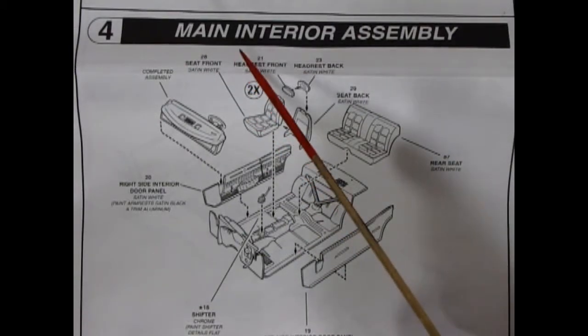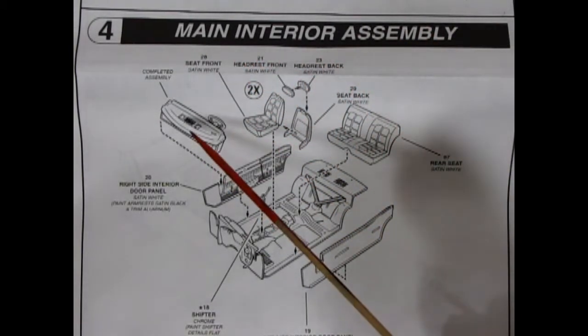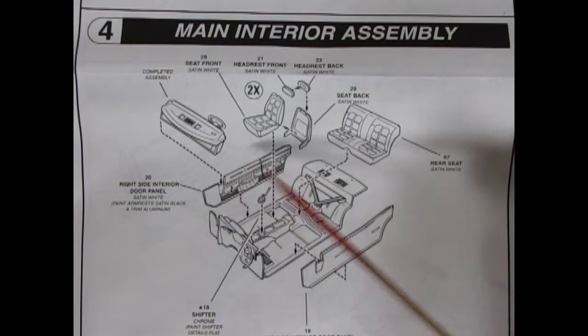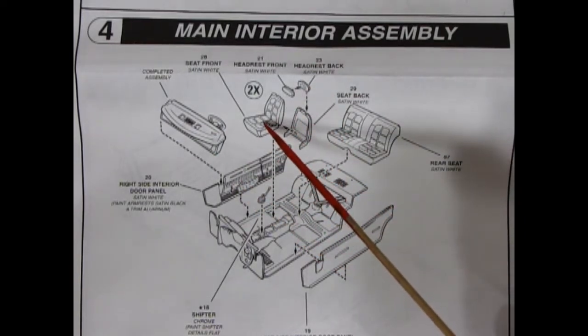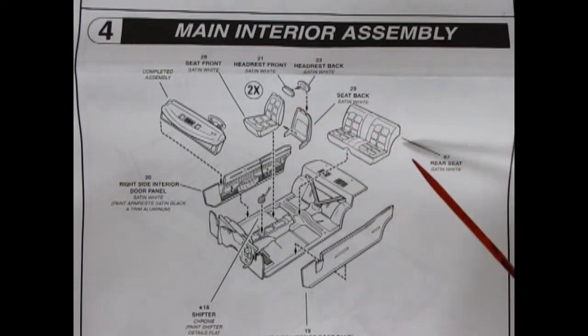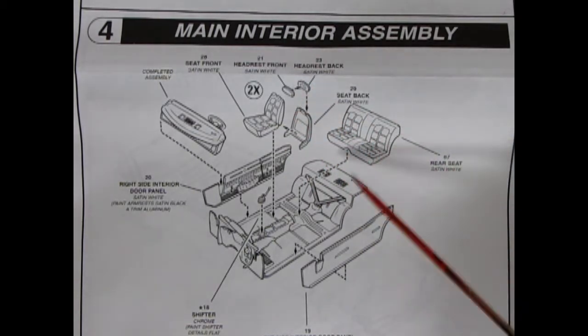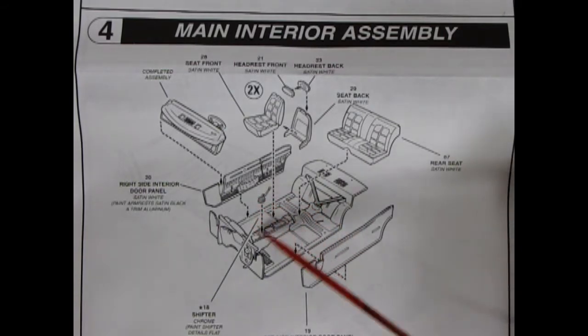Section four shows our main interior assembly. We've got our dashboard completed going into these separate door panels. The bucket seats for the front get glued together so you get the front and the back as well as the headrests and the rear seat which covers over that nice brace. There is a shifter in here as well.